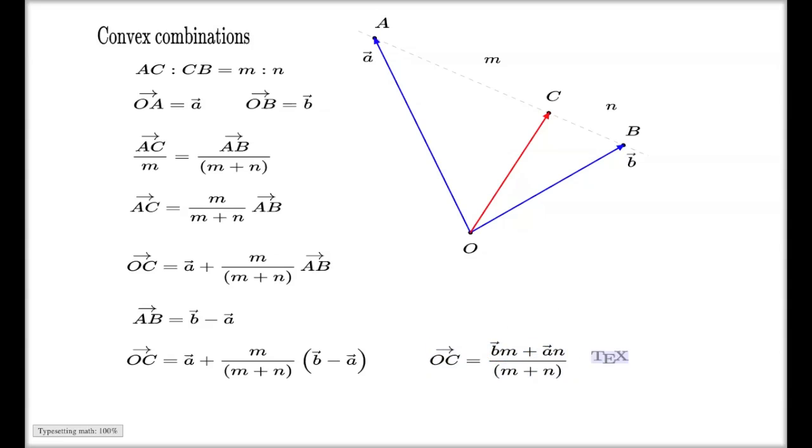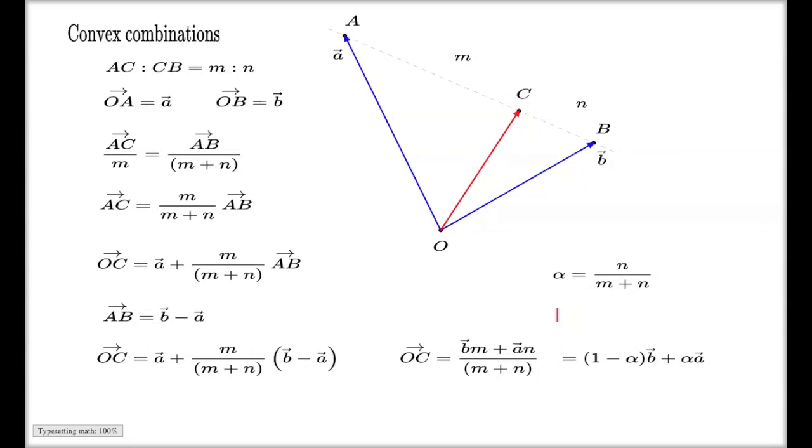Another way to write this is like this. People often write it like this: (1 - alpha) times B vector plus alpha times A vector, where alpha is the fraction m/(m+n).